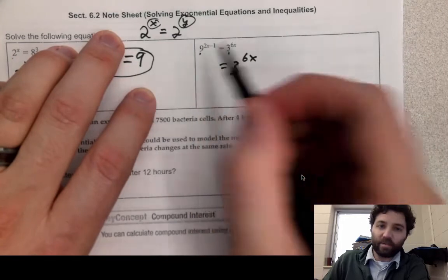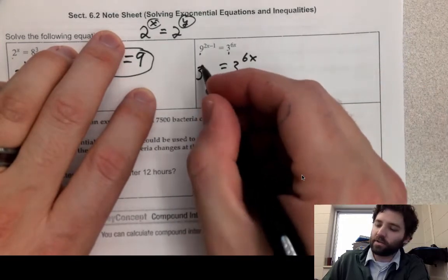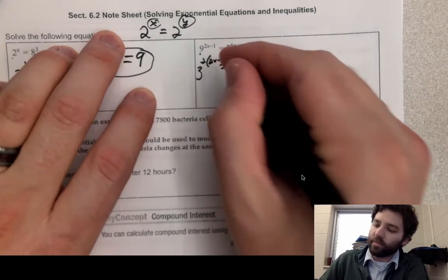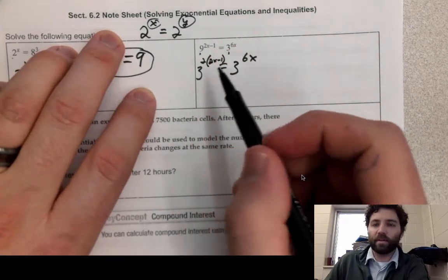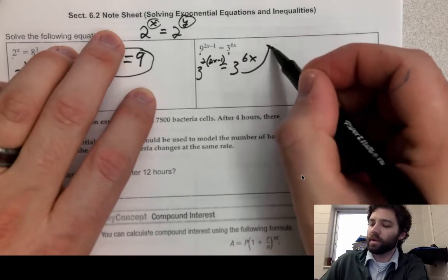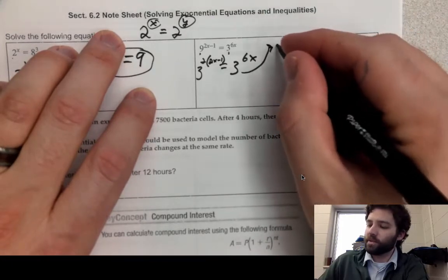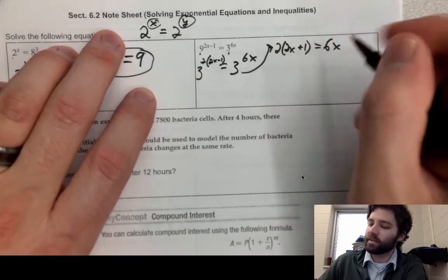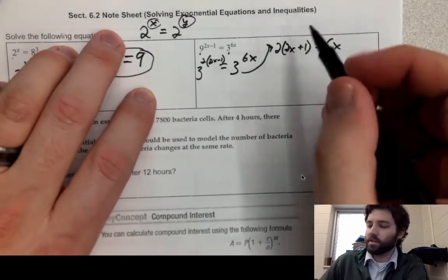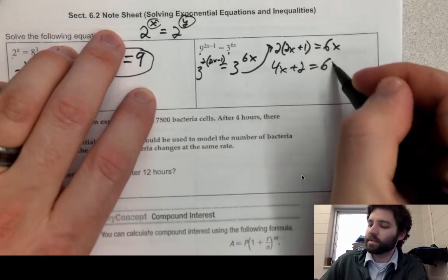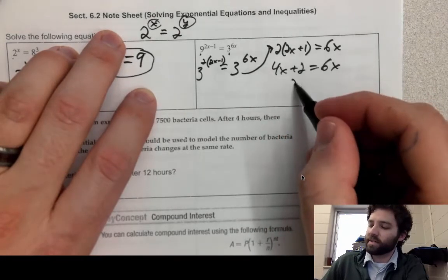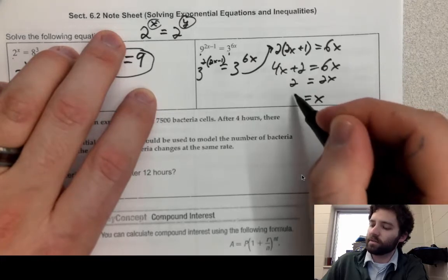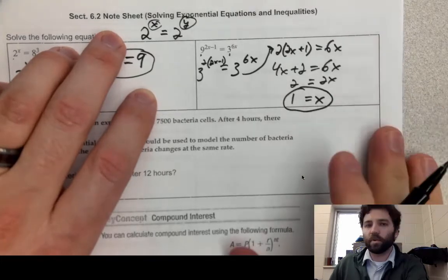I'll write 9 as 3 squared, so the right side becomes 3 squared raised to the power of 2x minus 1. Since the bases are the same I set the exponents equal: 2 times (2x minus 1) equals 6x. Distributing gives 4x plus 2 equals 6x. Subtracting 4x from both sides gives 2 equals 2x, and dividing by 2 gives x equals 1. That's the method we'll use for most equations in this section.